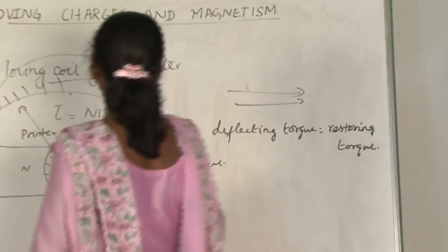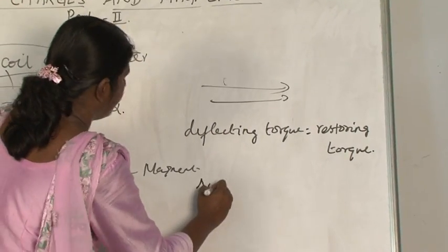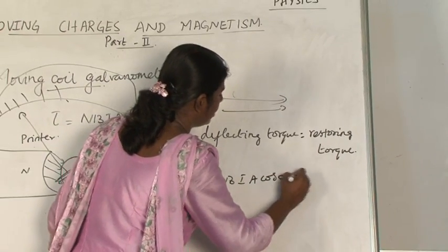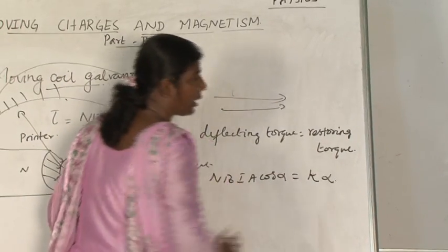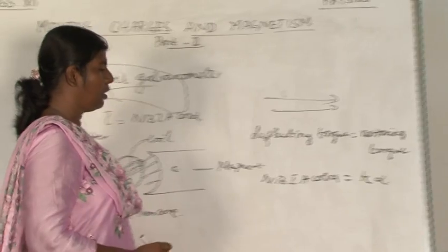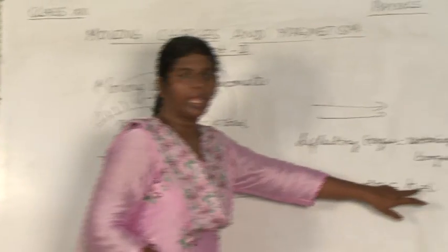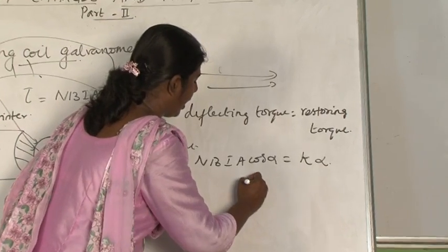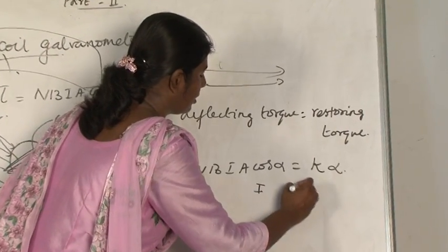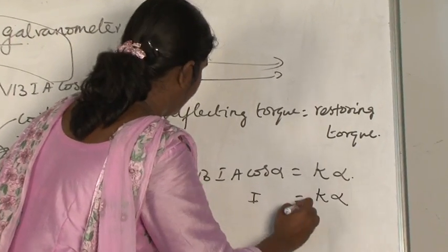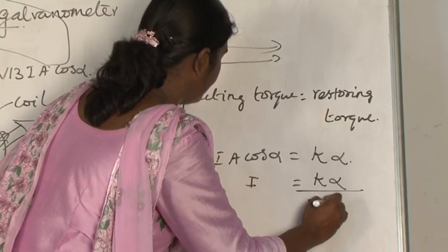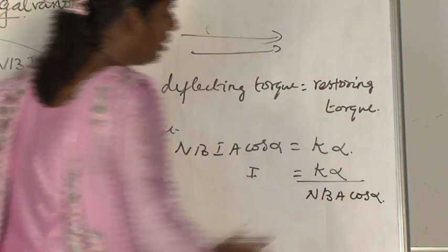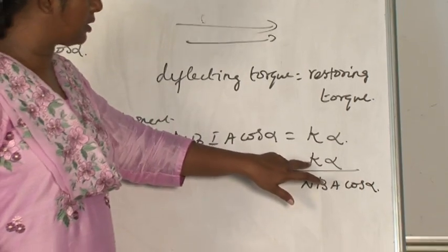What is your deflecting torque? N BiA cos alpha is equal to K into alpha, where K is the constant. Now if you want to find your I, that will be K alpha divided by N BiA cos alpha. Here you see K is the constant.